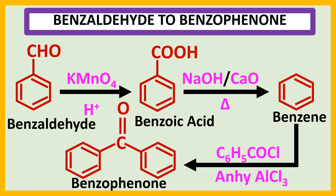In summary: in the first step, benzoic acid is produced; in the second step, benzene is produced; and in the third step, benzophenone is produced.